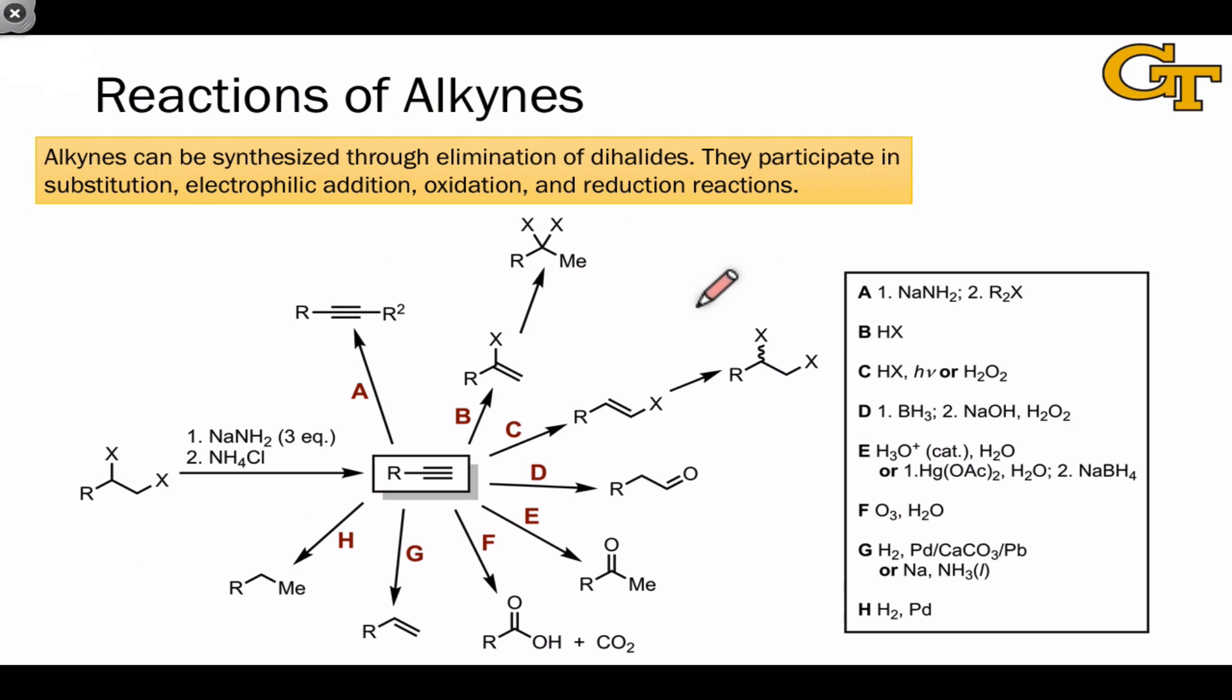The map on this slide shows us eight different reactions of alkynes and the products that they lead to. One thing we haven't yet discussed is how to synthesize alkynes from other functional groups.